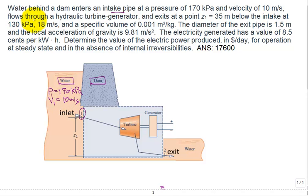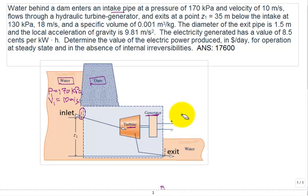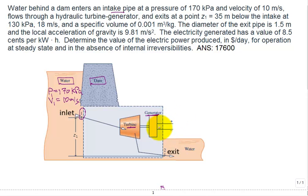It flows through a hydraulic turbine generator. Here's our turbine. Here's our generator. The purpose of that hydraulic turbine generator is to generate electric power. That's what's shown here. You could put W dot coming out in the form of electricity.